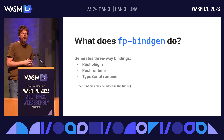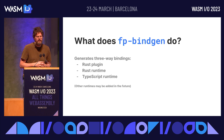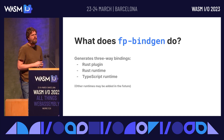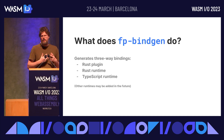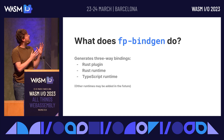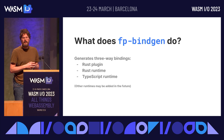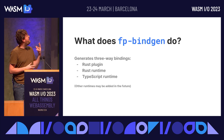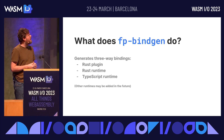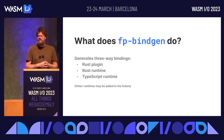So what does FP bindgen really do for you? You need some kind of protocol definition, and then it generates a set of bindings that allow you to start writing Rust plugins. It also generates a runtime so you can run those plugins inside a Rust application, and it generates a TypeScript runtime so you can run the same plugins within a TypeScript environment such as a browser. Other runtimes may be added in the future, but this tool is really Rust-centered.